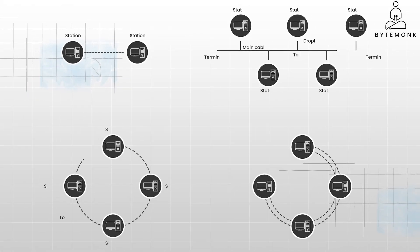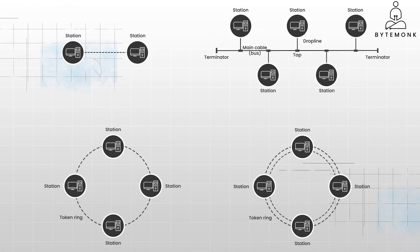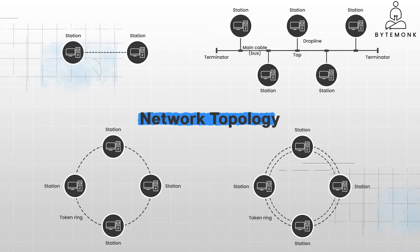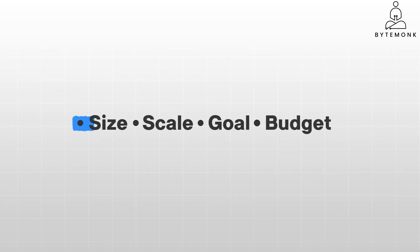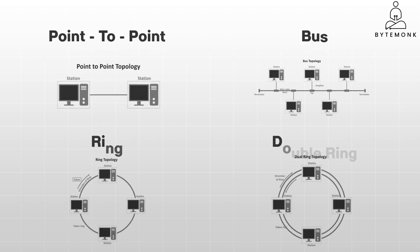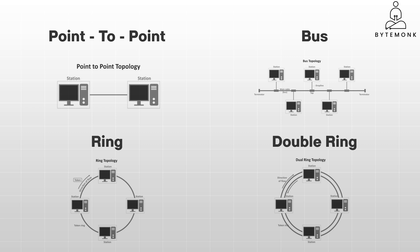In our last video, we tackled the basic network topologies: point-to-point, bus, and ring. The ideal network topology depends on each business's size, scale, goals, and budget. The layout of a network has a direct impact on network functionality. Selecting the right topology can improve performance and data efficiency, optimize allocation of resources, and reduce operational cost.